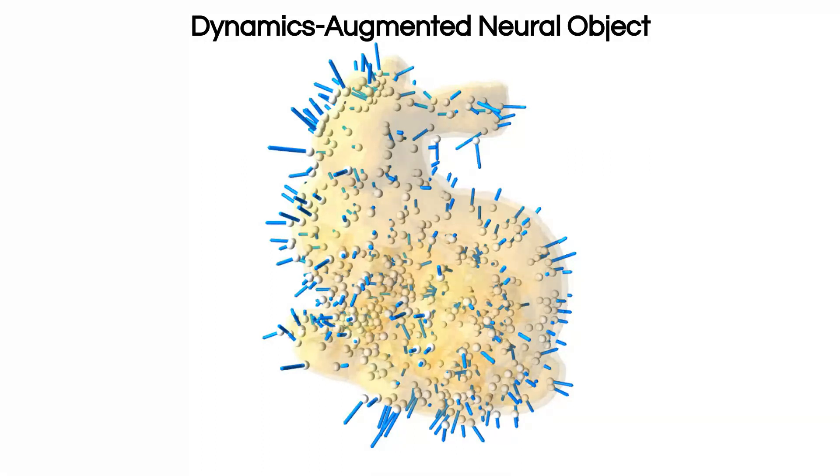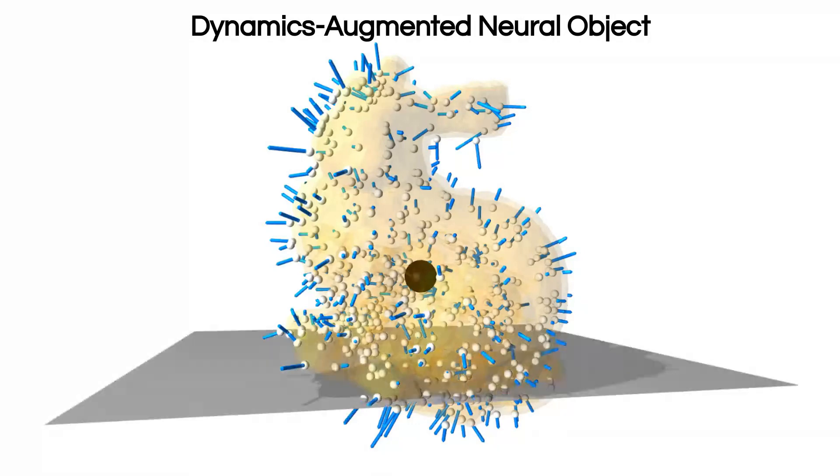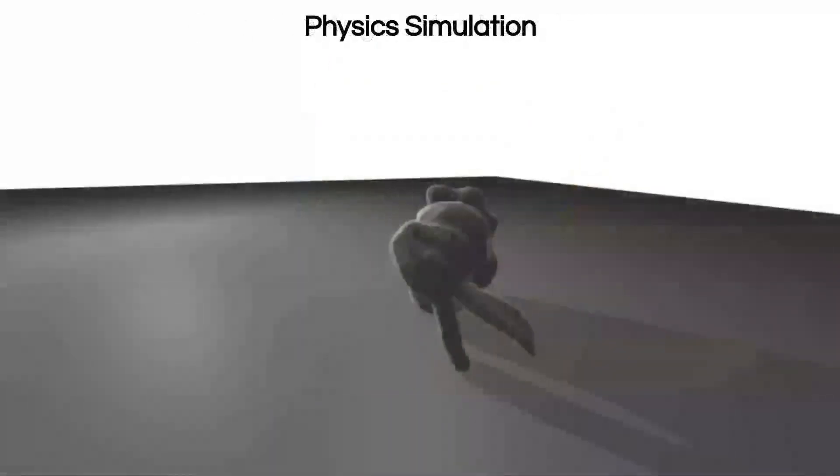We estimate the mass, center of mass, shown with a black dot, and inertia matrix by integrating over the neural density field. The yellow arrow represents the contact force due to the collision between the neural object and the plane. This force is applied at the centroid of the overlap volume, shown with a red dot. This overlap volume is exaggerated for visualization.